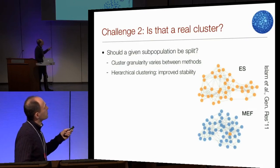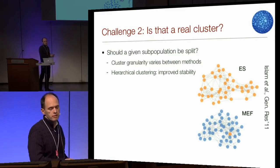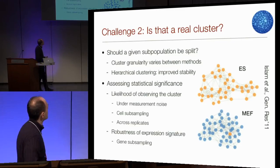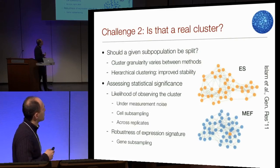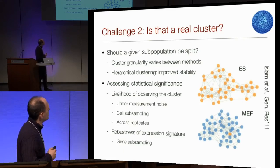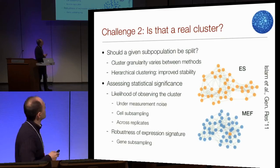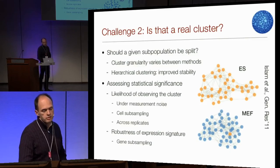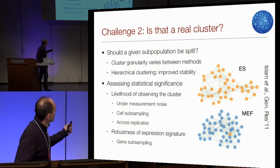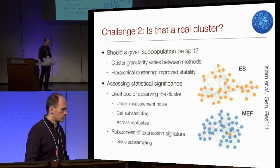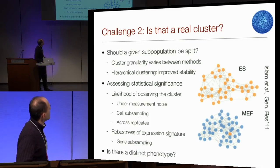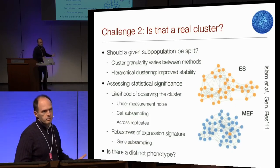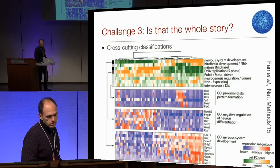Hierarchical clustering tends to be more stable because you can see the relationship between clusters that were split or not split. You could evaluate stability by looking at the likelihood of observing the cluster in a repeat experiment, or computationally — as methods like Seurat do — with cell sub-sampling or introducing models of measurement noise to see if the cluster is stable. You could also consider the robustness of the gene expression signature: if a cluster is driven by a single gene, perhaps that's not the feature you want. Ideally, knowing if there's a phenotype associated with a cluster is a much better definition.